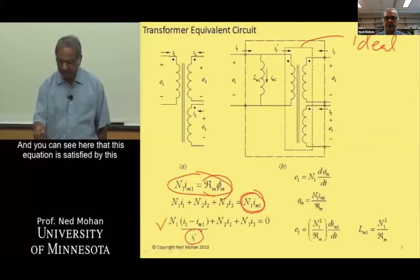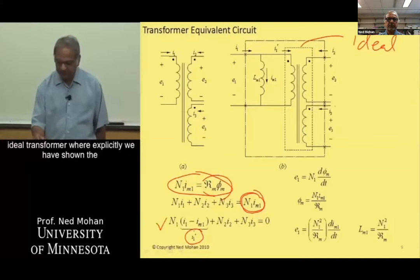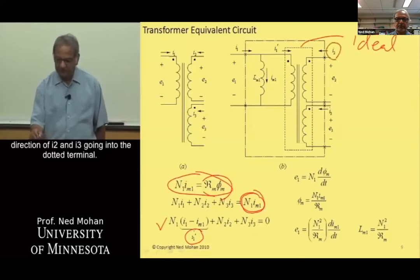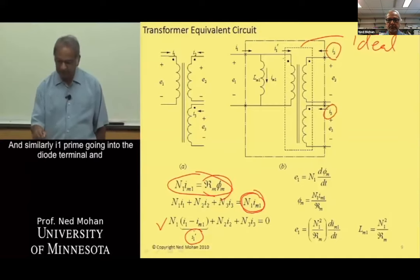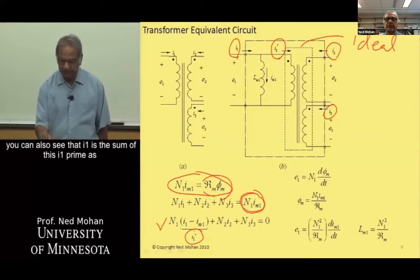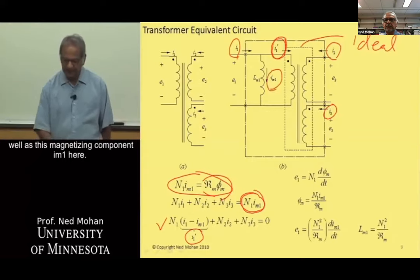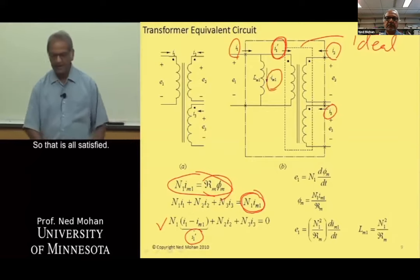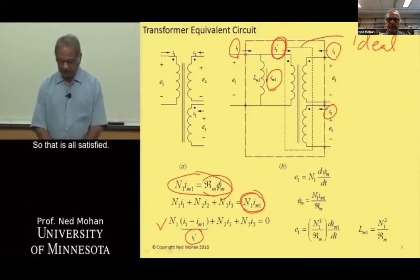This equation is satisfied by the ideal transformer where we have explicitly shown the direction of I2 and I3 going into the dotted terminals, and similarly I1 prime going into the dotted terminal. I1 is the sum of I1 prime as well as the magnetizing component. So that is all satisfied.